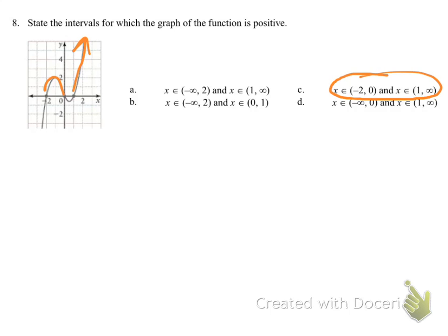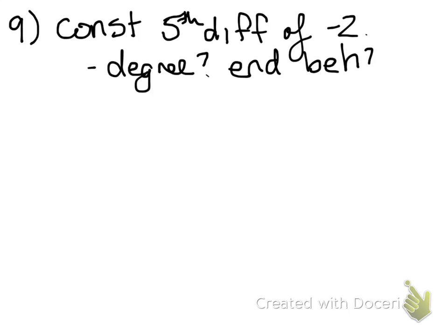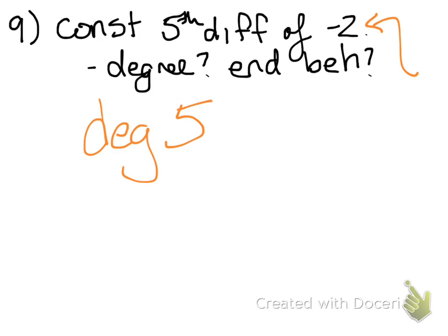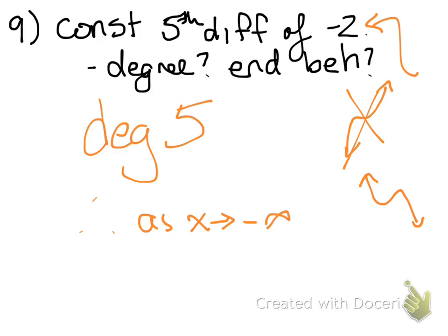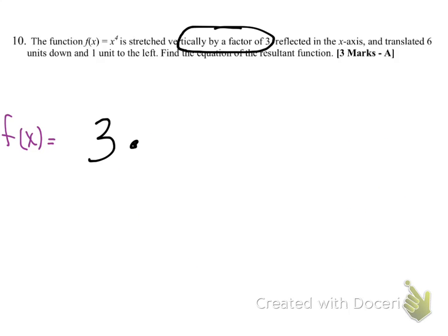Number nine: the constant fifth difference was negative two — state the degree and end behavior. The degree has to be five because the fifth difference is constant. The leading coefficient is negative, so normally an odd-degree polynomial looks like this, but because of the negative it actually looks like this. That makes the end behavior: as x goes to negative infinity, y goes to positive infinity; and as x goes to positive infinity, y goes to negative infinity.